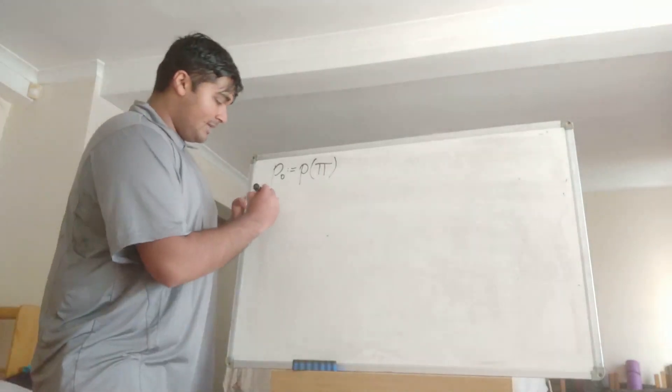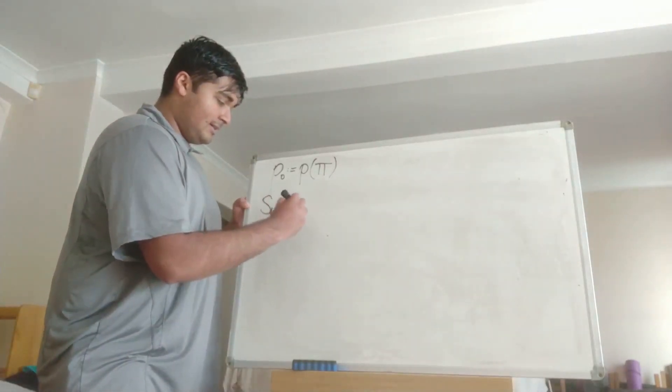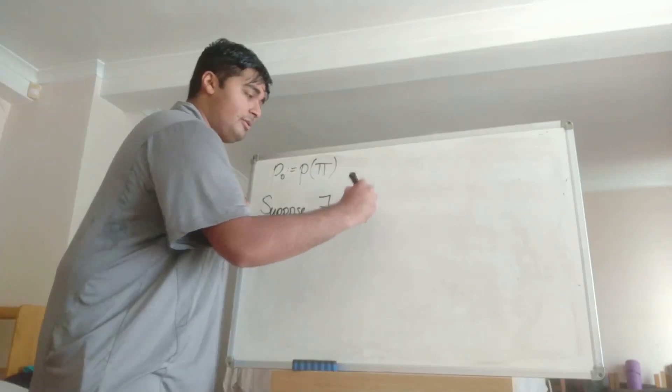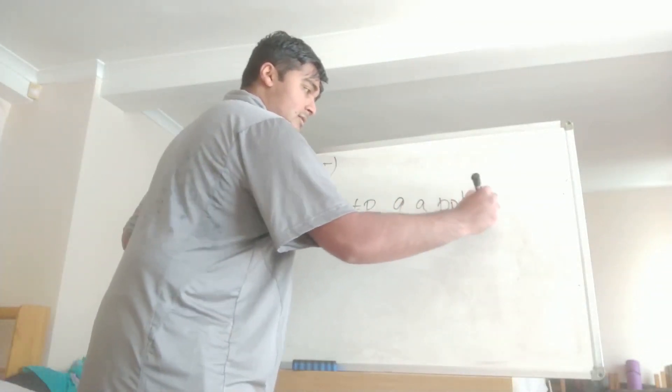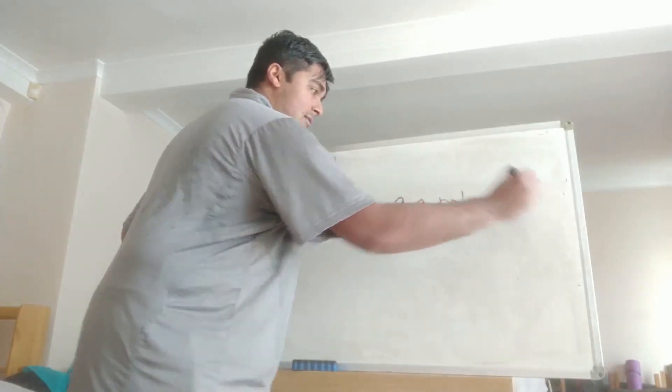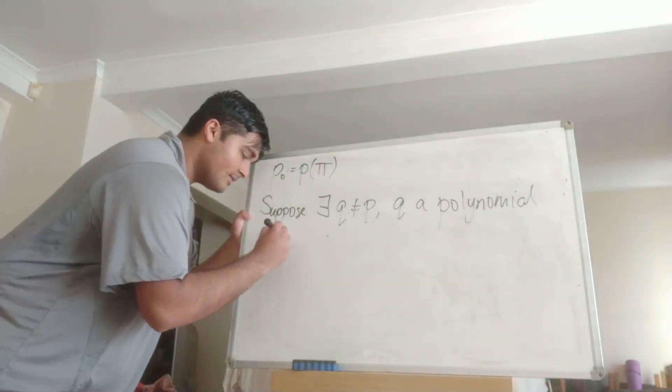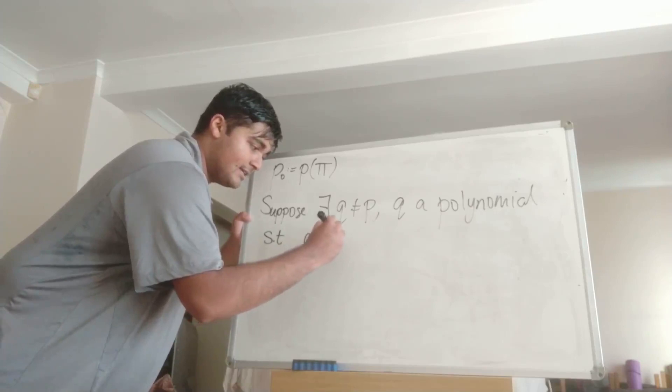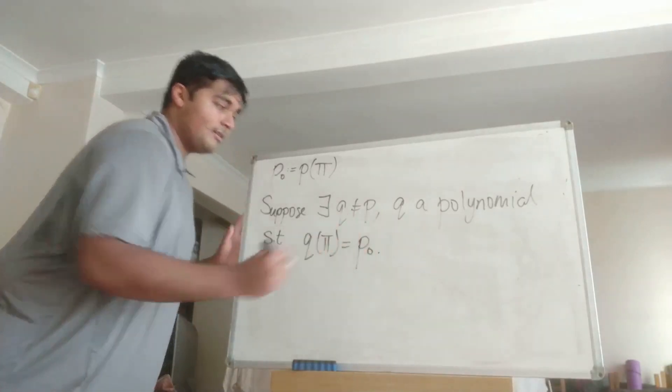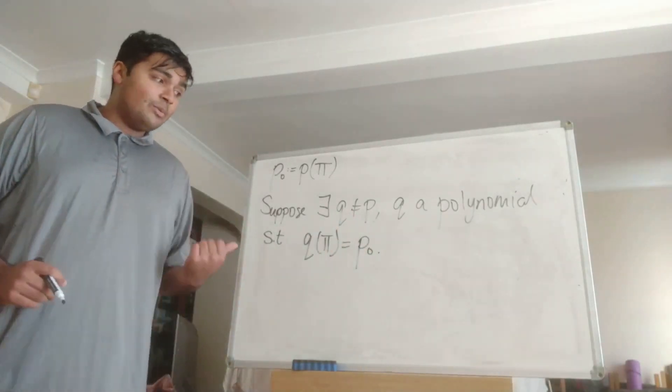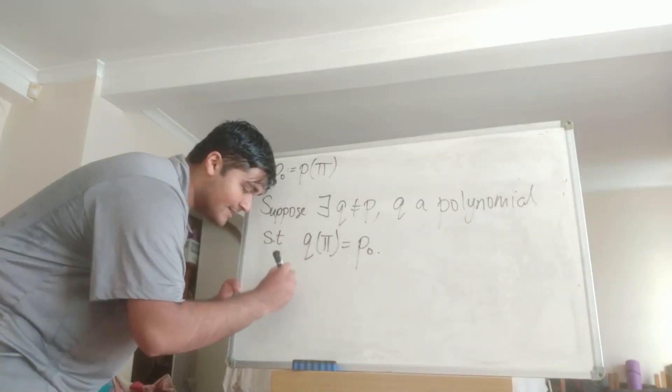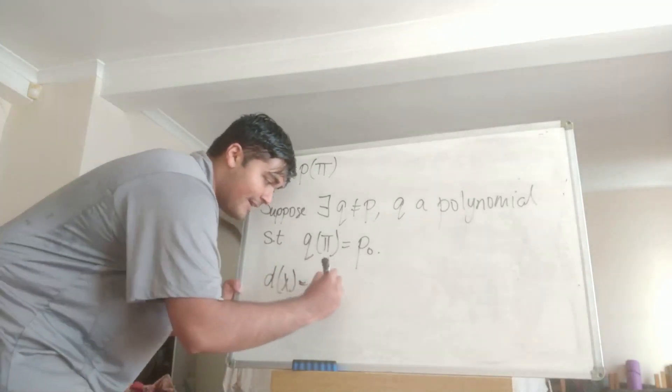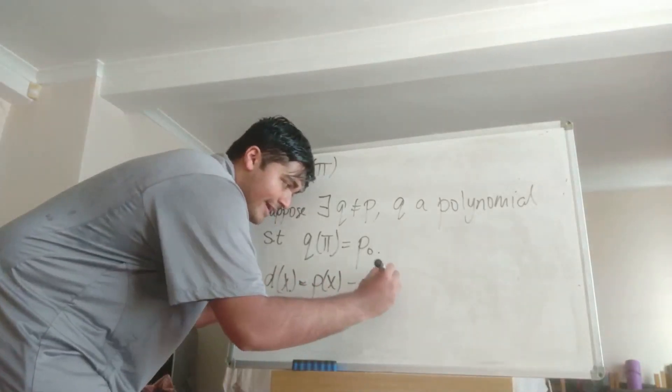So suppose there exists Q, a polynomial which isn't equal to P such that Q(pi) equals P_0. Well, then what we can do is actually introduce D, which I'm going to define as D(x) = P(x) - Q(x).